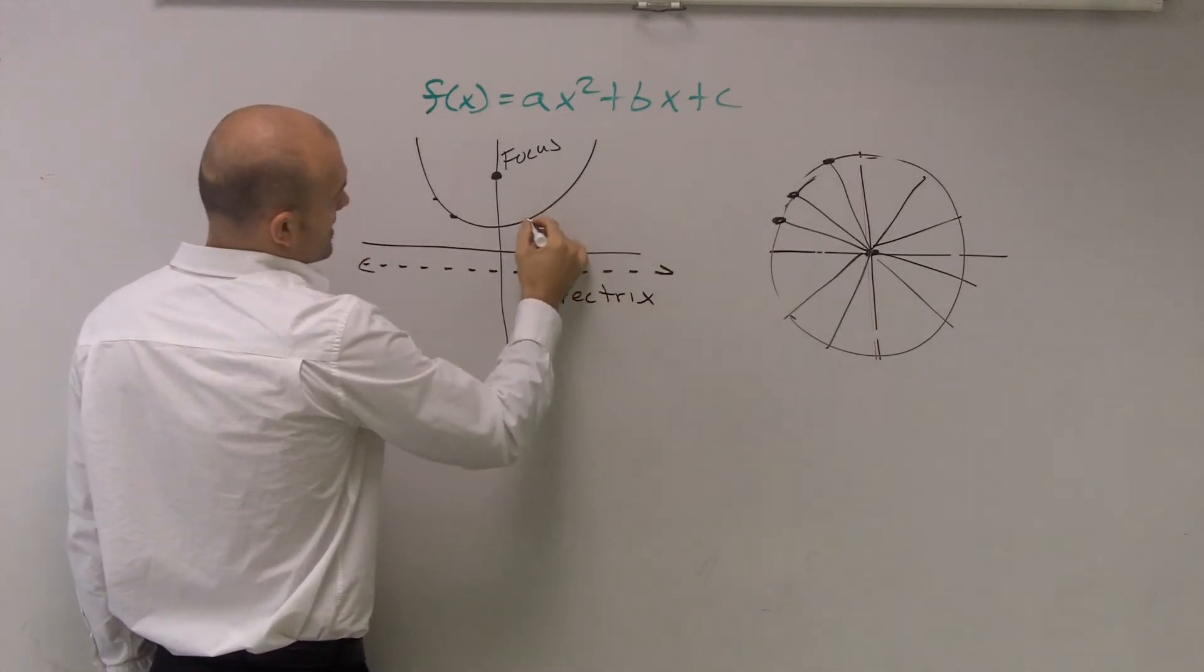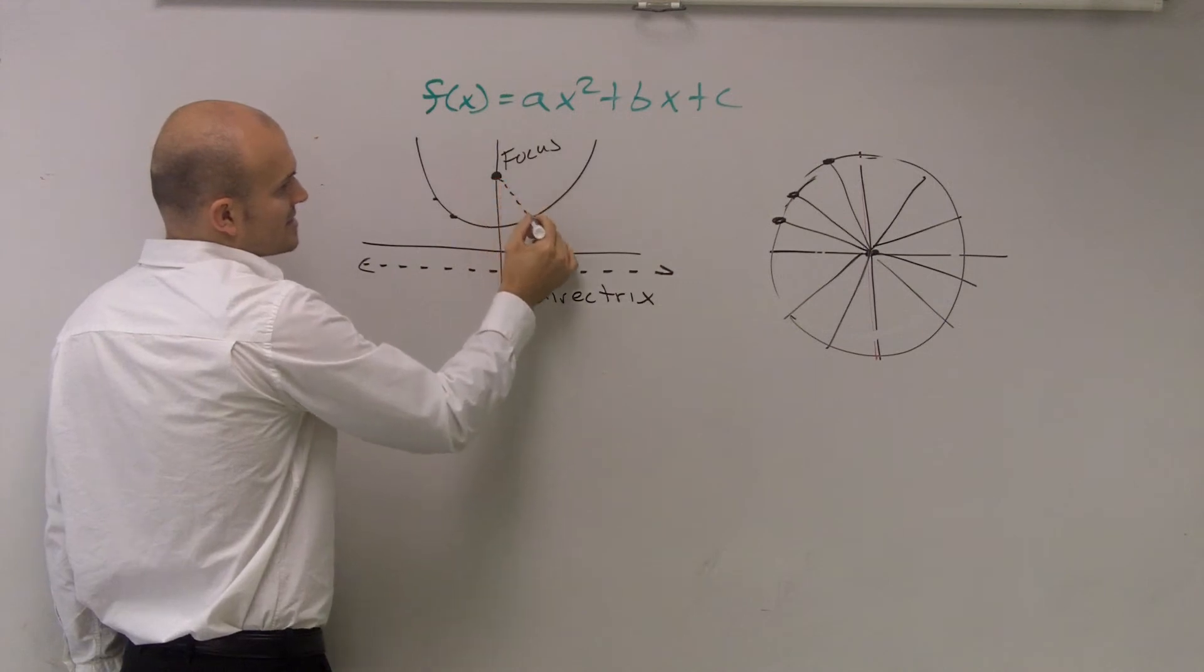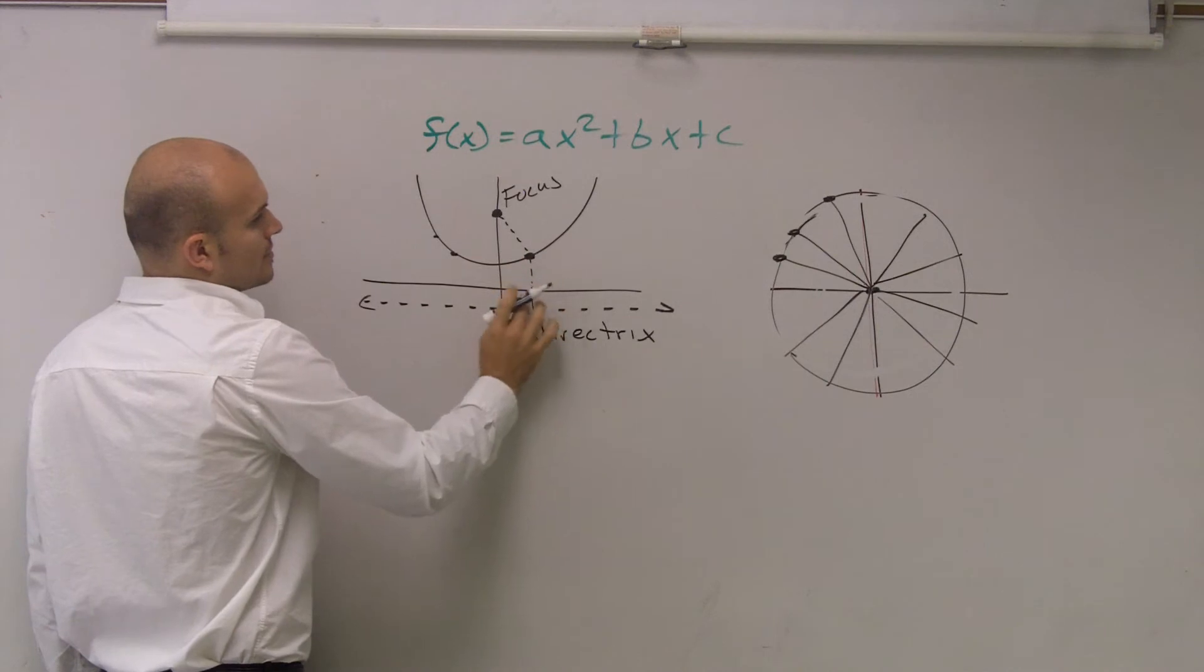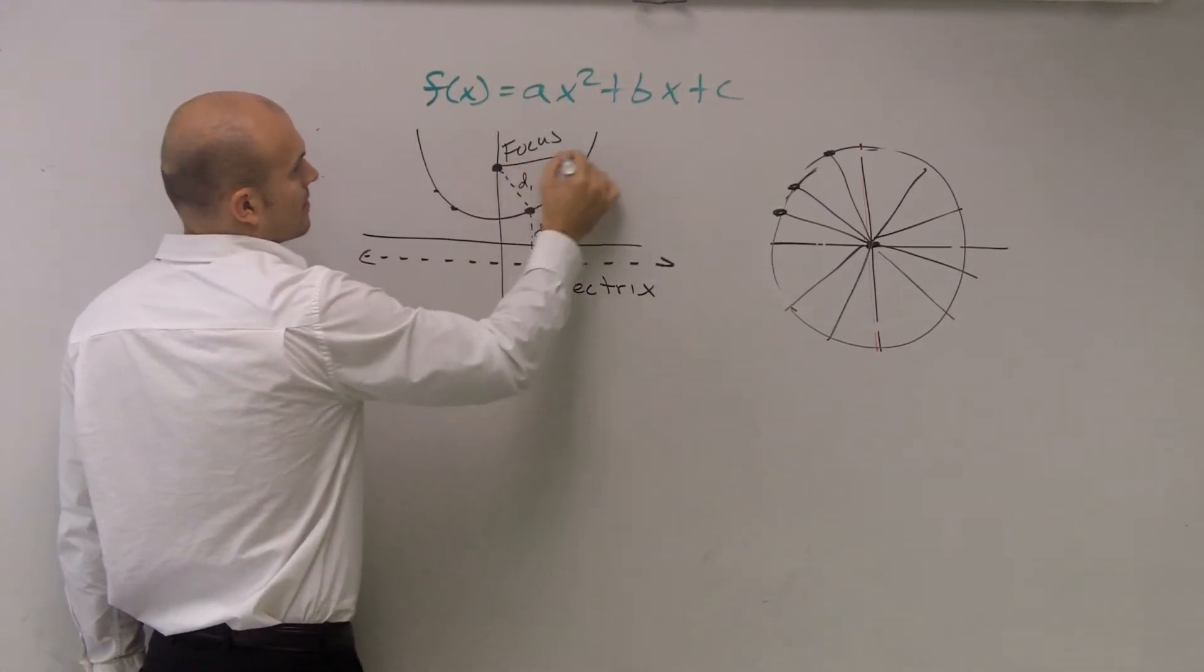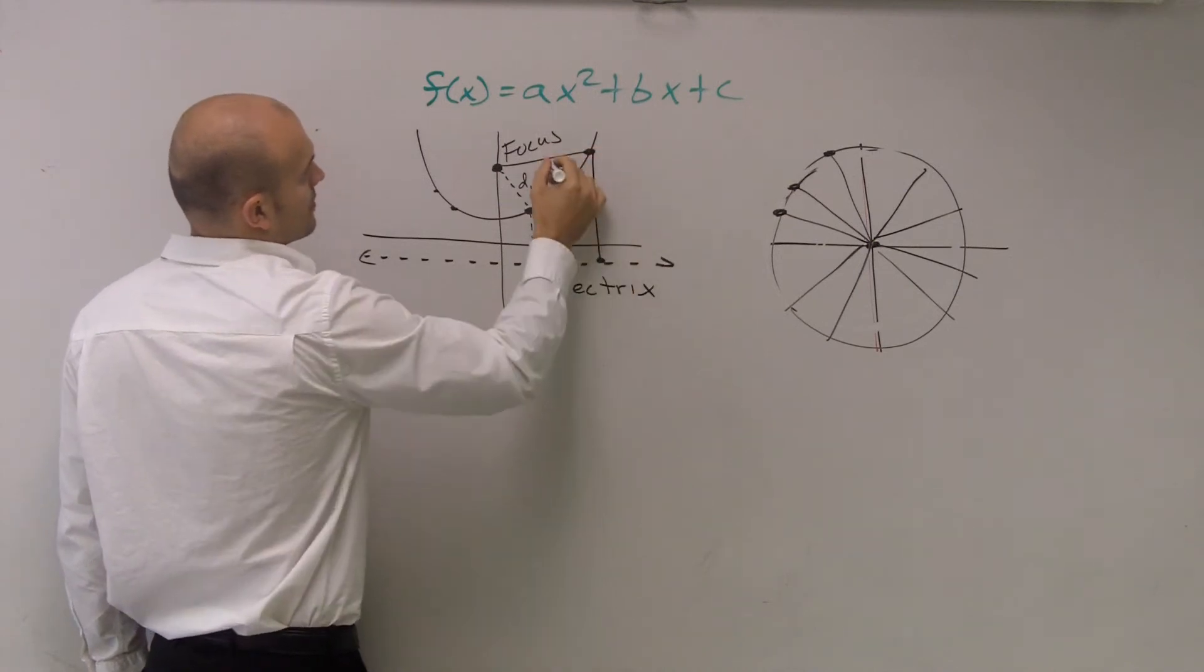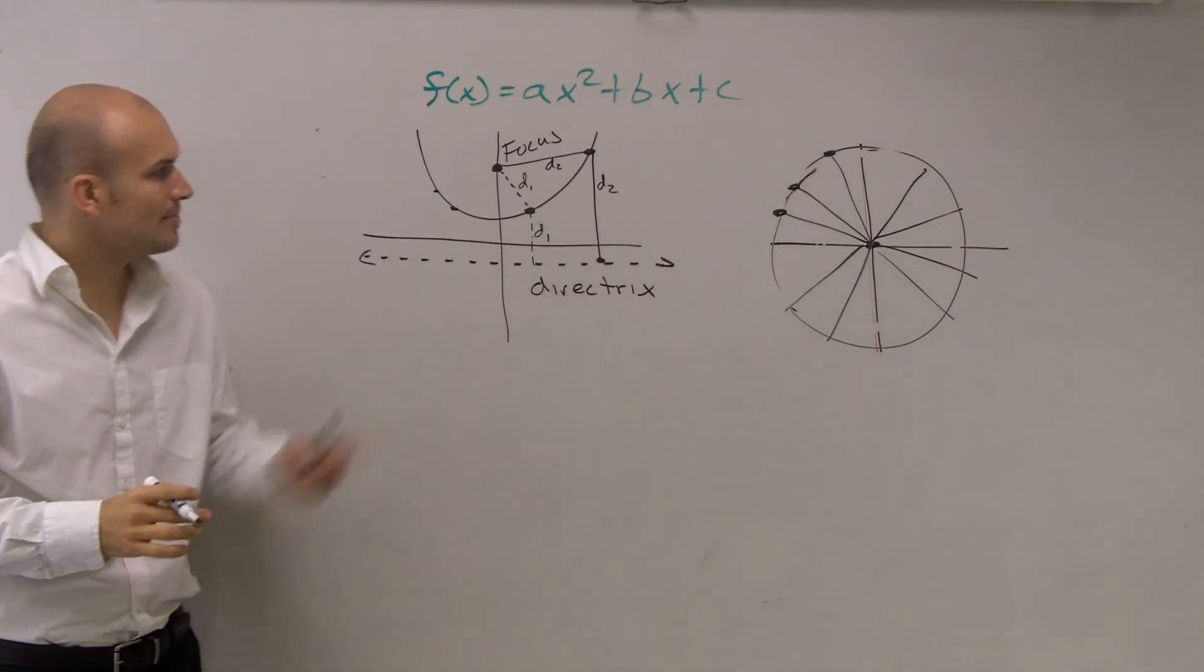So, what you guys can say is, if here's your point, here's a point on the line, the distance from that point to the focus is equal to that point to the directrix. That's how we find a parabola.